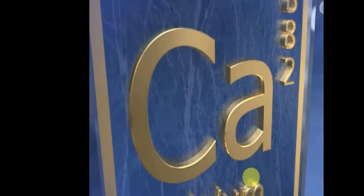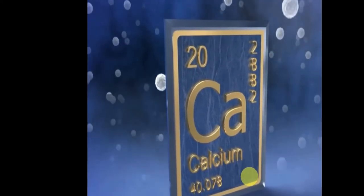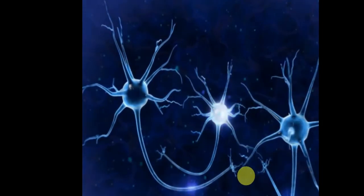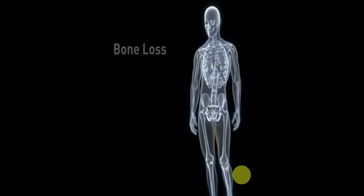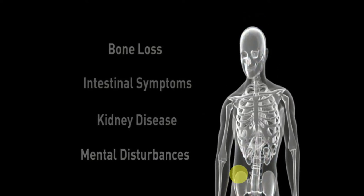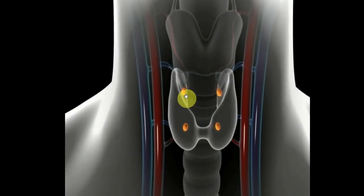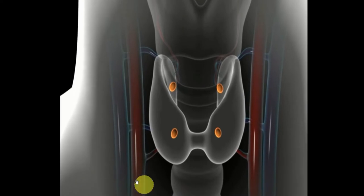The parathyroid glands are almost exclusively responsible for regulating calcium levels in the bloodstream. Calcium is a vital nutrient used by every single cell for normal daily function—it's responsible for transferring messages between nerves, building bones, and much more. If calcium levels are not exactly right, a variety of problems occur, including bone loss, intestinal symptoms, kidney disease, and mental disturbances. Long-standing elevation in calcium places a heavy burden on the body.